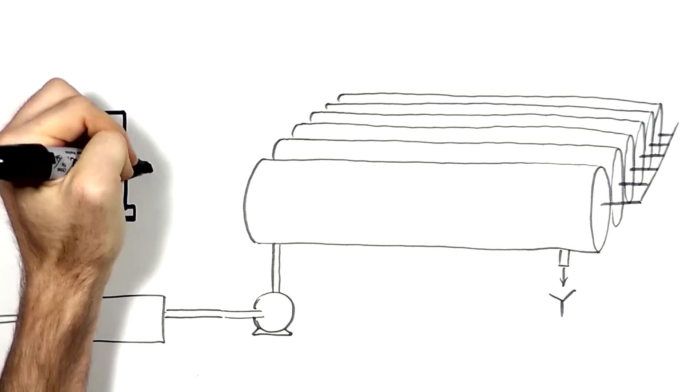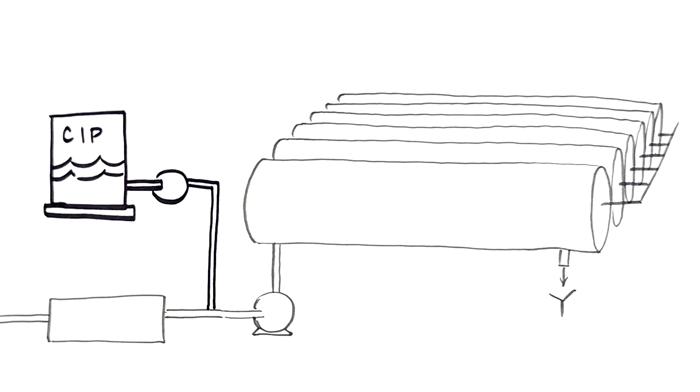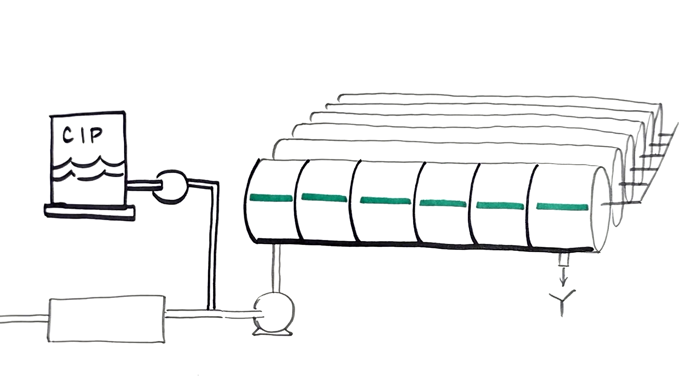In this scheme, we can see the reverse osmosis train in normal operation. There are six pressure vessels and six membranes in each PV.